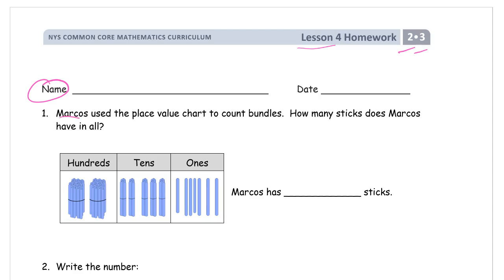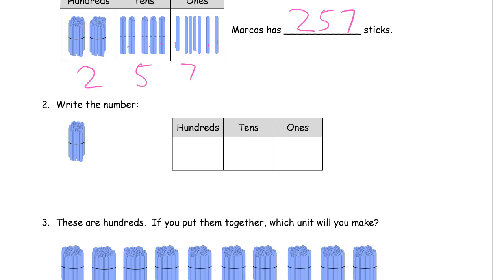Marcos used the place value chart to count bundles. How many sticks does Marcos have in all? Well here's two hundreds and one two three four five, so let's do it like this. It looks like a place value chart. I'm just gonna write the numbers here: two hundreds, five tens, and we have one two three four five six seven. So he has two hundred fifty seven sticks and we're gonna write the number.